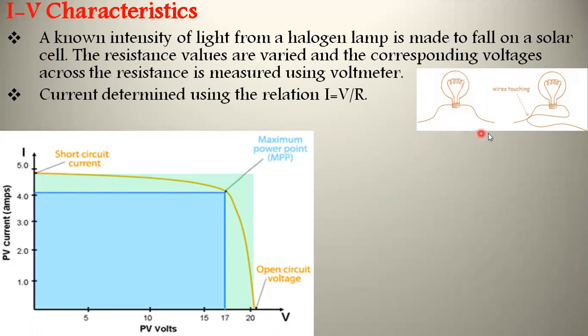The open circuit voltage means the solar cell is not connected to any external load. In that situation, the current in that circuit is zero and the maximum voltage is generated. This is called open circuit voltage, represented as VOC.